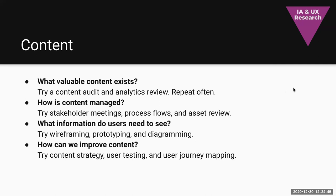And then the content — the substance. What valuable content exists? Maybe this is collateral your organization or client has, or something that comparables or competitors may have. Understand what's out there so you know you're not starting from zero. Do a content audit, some analytics review, and repeat this very frequently. How is content managed? Talk to stakeholders. Develop a process flow to understand how content moves from an idea to the point where it's published. Do an asset review — what photography, infographics, and copy do you have? What's available from the marketing team? Be aware of where this stuff is, who owns it, who manages it, and who decides when it's retired.